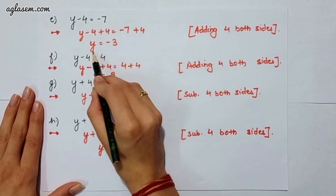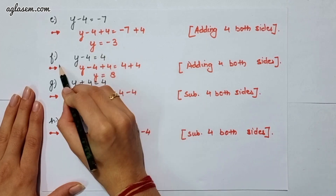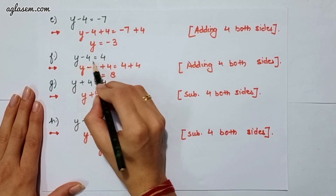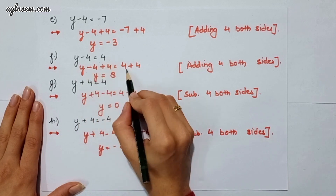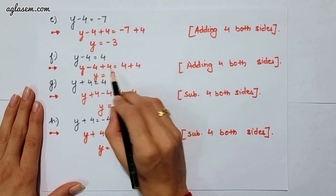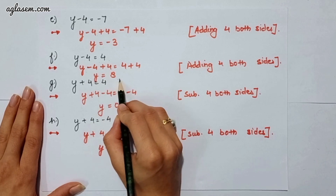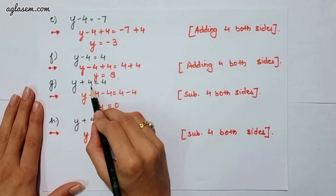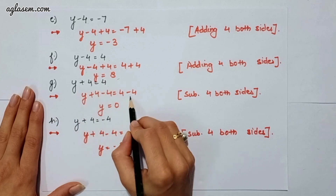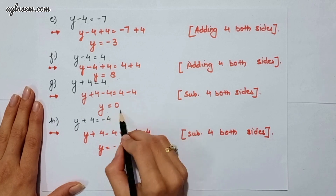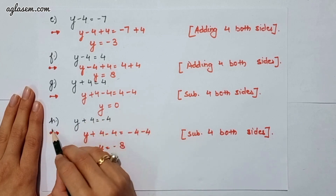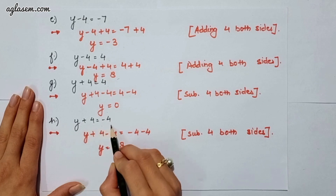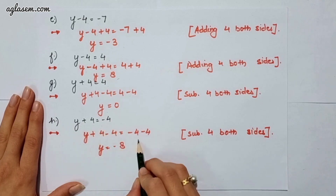That gives y as 8. Moving to the seventh part, which says y plus 4 is equal to 4. Here we have to subtract 4 on both sides, then y will come as 0. The eighth part says y plus 4 is equal to minus 4. Subtracting 4 on both sides, we get y as minus 8.